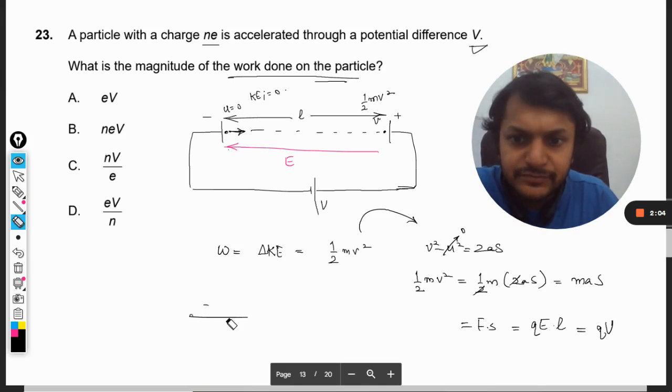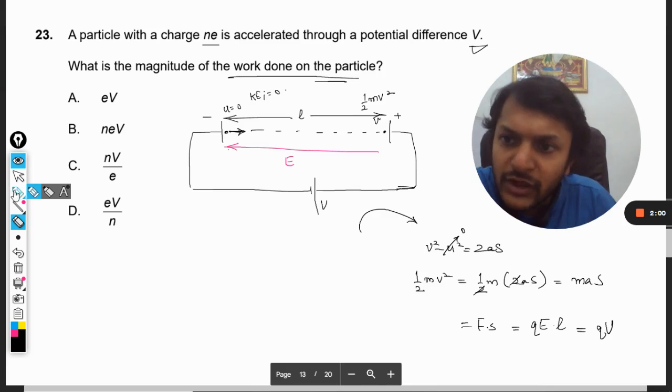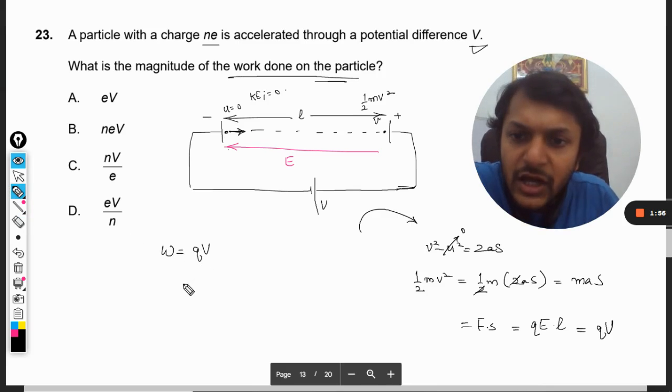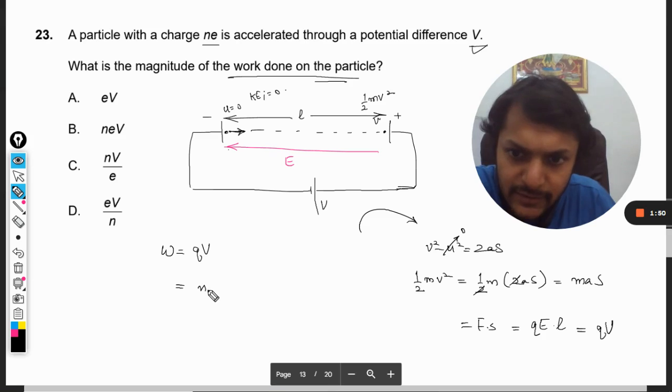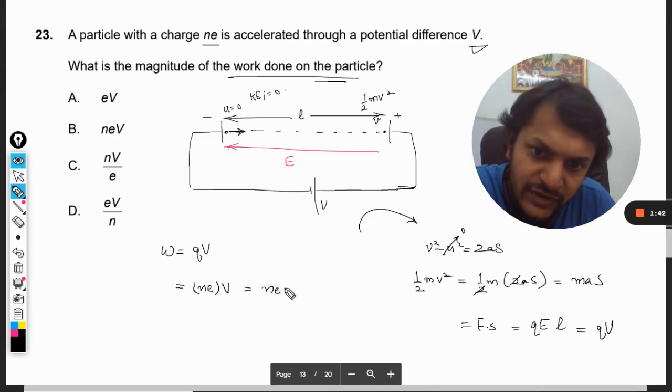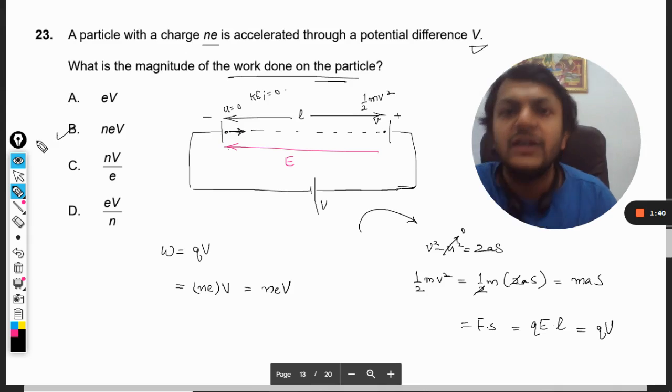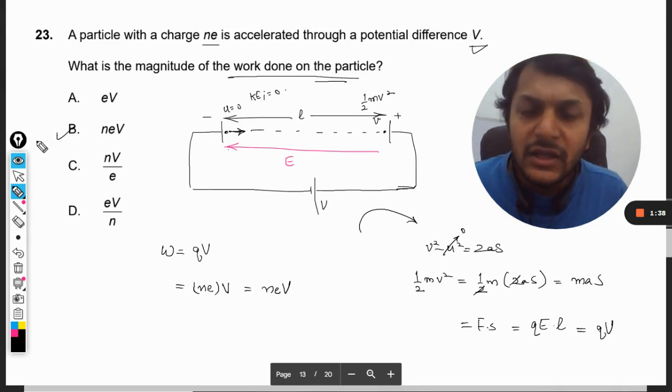Now q is the charge on this charged particle, which is ne, and V is the potential difference across the two electrodes, which is capital V. So our answer will be neV, answer B.